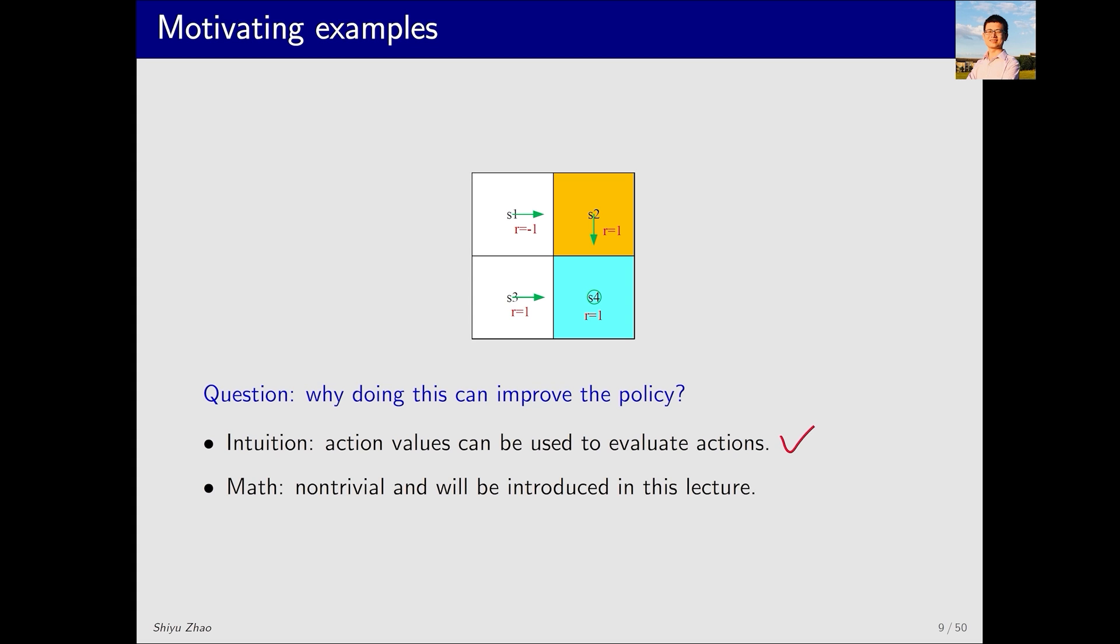However, mathematically it's not so straightforward. Why? Because in this example it's quite simple. For states like s2, s4 and s3, the optimal actions are already chosen, so in such cases, choosing the action with the highest action value at s1 can lead us downwards. But what if it's not the case? For example, if at s2 the action is to move up, at s4 to move down, and at s3 to move left, meaning the policy isn't optimal in other states, can we still obtain the optimal action at s1 by calculating the highest action value? There's some uncertainty here.